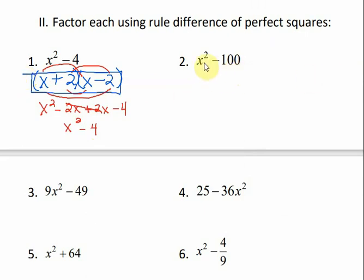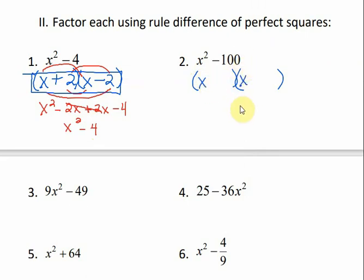Let's factor the next binomial. We make two sets of parentheses. The square root of x squared is x. What's the square root of 100? That would be 10. So we get (x + 10)(x − 10), and we're done.